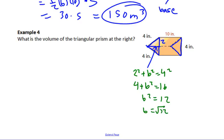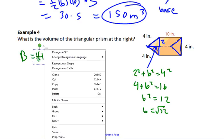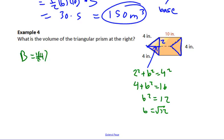Area of the base times the—area of the one base would be—we're going to do 1/2 times 4 times that square root of 12. That would be the area of one of these triangles, and multiply by the height, which would be 10. I'm turning it to visualize that triangle on the bottom. So we have 1/2 times 4 times 10 would be 20 square roots of 12.